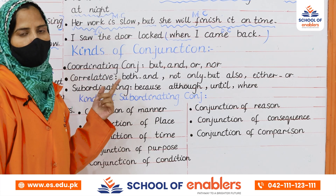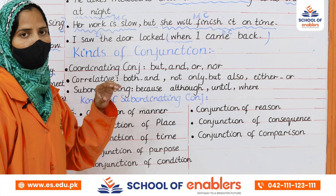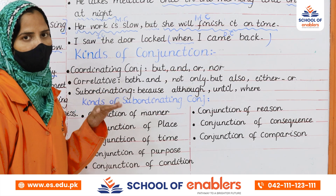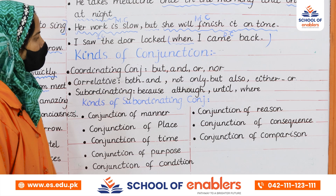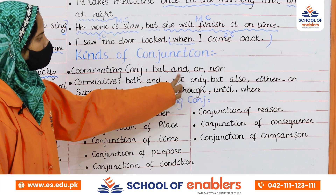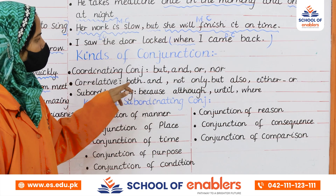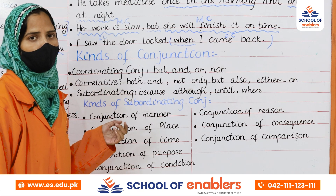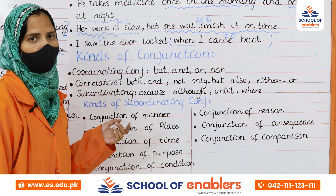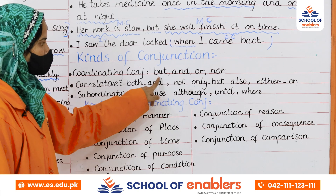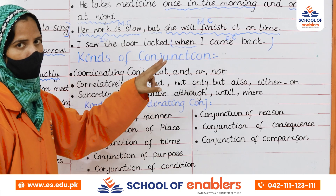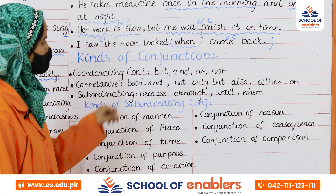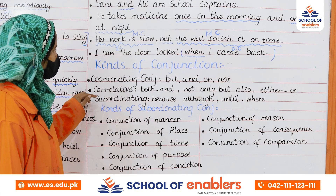Let's discuss the three types of conjunction. The first is coordinating conjunction. As the name suggests, these conjunctions are used to connect main clauses of the same level. The words are: but, and, or, not, so. For example: 'I didn't return my friend's book but she was so kind she told me to do it later.'